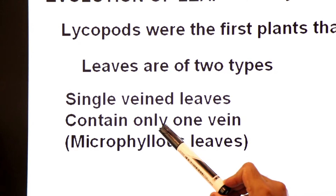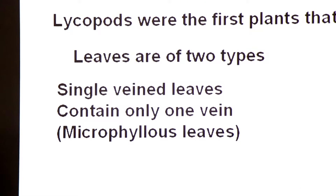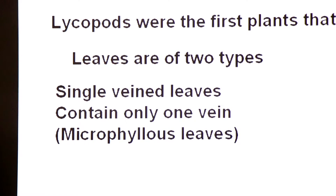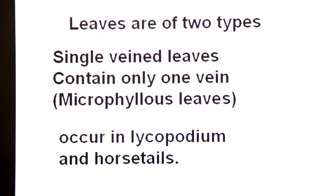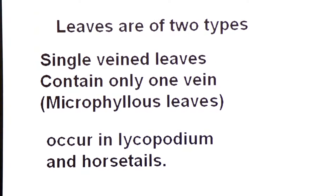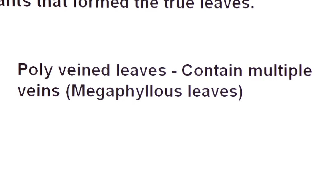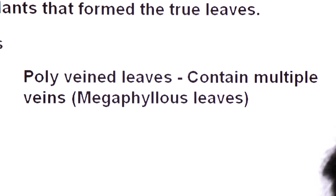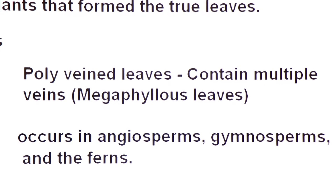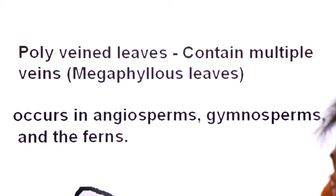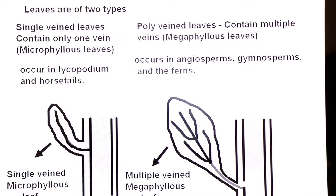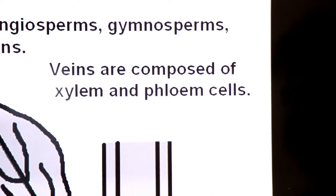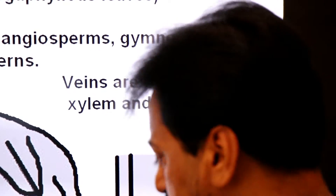Single-vein leaves contain only one vein and are called microphyllous leaves. Plants that have evolved single-vein leaves include Lycopodium and horsetails. Poly-vein leaves contain multiple veins and are also called megaphyllous leaves. Plants that evolved from poly-vein leaves include angiosperms, gymnosperms, and ferns. Veins are composed of xylem and phloem cells.